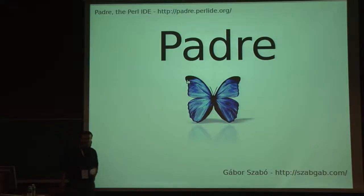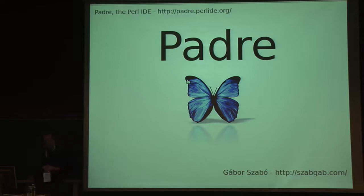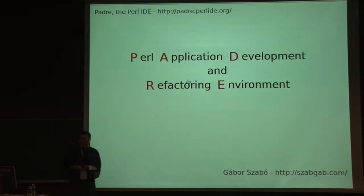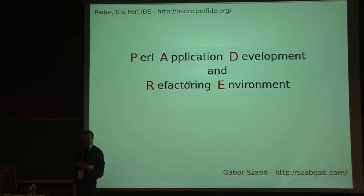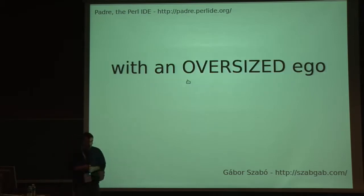The previous talk mentioned that this is actually implemented in Perl 6, and you can use it now — code junctions. Anyway, what is Padre? Padre stands for Perl Application Development and Refactoring Environment. Of course, this is a really bombastic name, but in fact this is just a text editor — it's a slightly oversized ego.